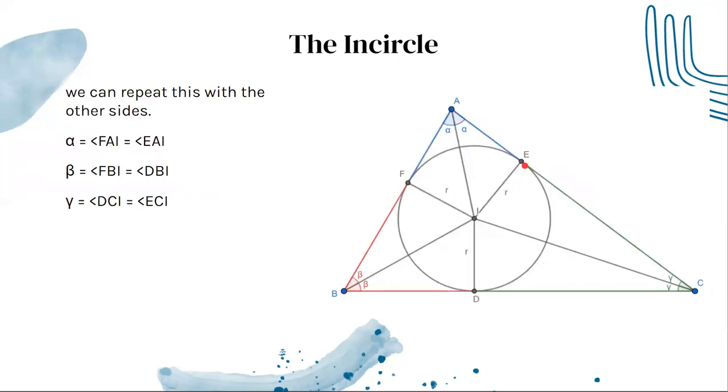Doing this on the other two sides, we have that the blue sides are equal, the red sides are equal, and the green sides are equal. We also have that the angles are equal. We can name the angles alpha and alpha, beta and beta, and gamma and gamma.